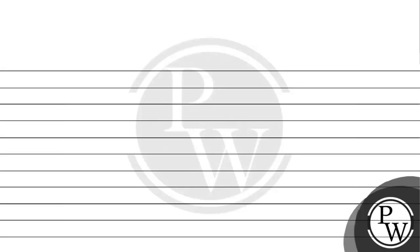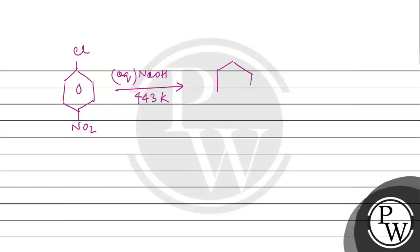We have been given para-nitrochlorobenzene. When we react it with aqueous NaOH in the presence of 443 Kelvin, the NO2 group will remain, while the Cl leaving group is displaced, giving O-Na+.